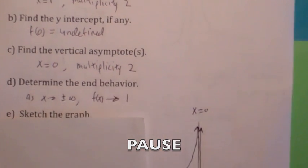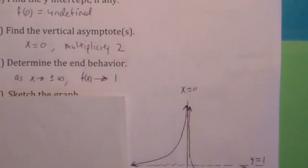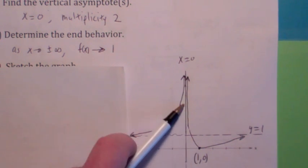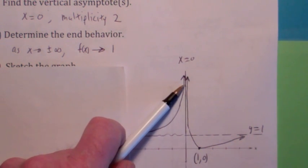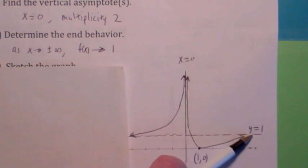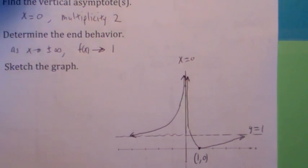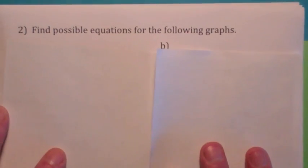Okay, I get a graph of something like this. It's going to have a zero multiplicity 2 at 1. It's going to have a vertical asymptote multiplicity 2 at zero, and a horizontal asymptote at y equal to 1. Of course, you could plot a few more points if you wanted to get more accurate.